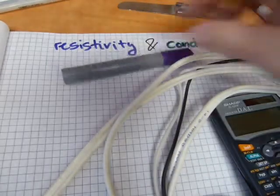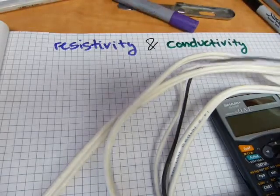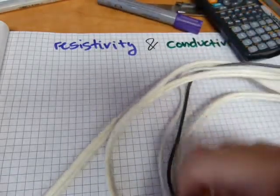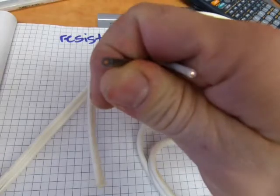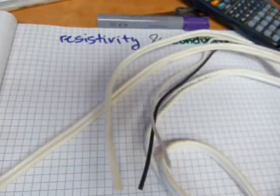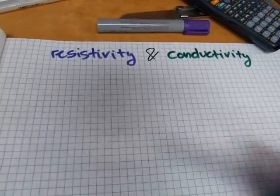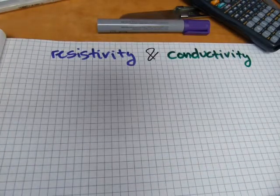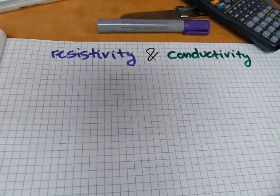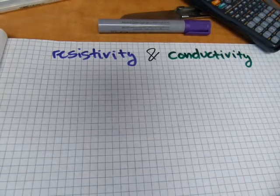Plastics have resistivity and conductivity. Here is some copper wire. Copper has resistivity and conductivity, but wood, human body, seawater, lots of things, everything, all matter has resistivity.